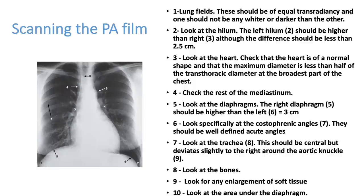Then look at the hilum. The left hilum is slightly higher than the right hilum. Look at the heart — it will be white in color. The total diameter of the heart should be less than 50% of the transthoracic diameter. Then look at the mediastinum. Normally, mediastinum is not widened in PA view. It will be widened in AP view. If it is widened in PA view, think that there is some infiltration there.